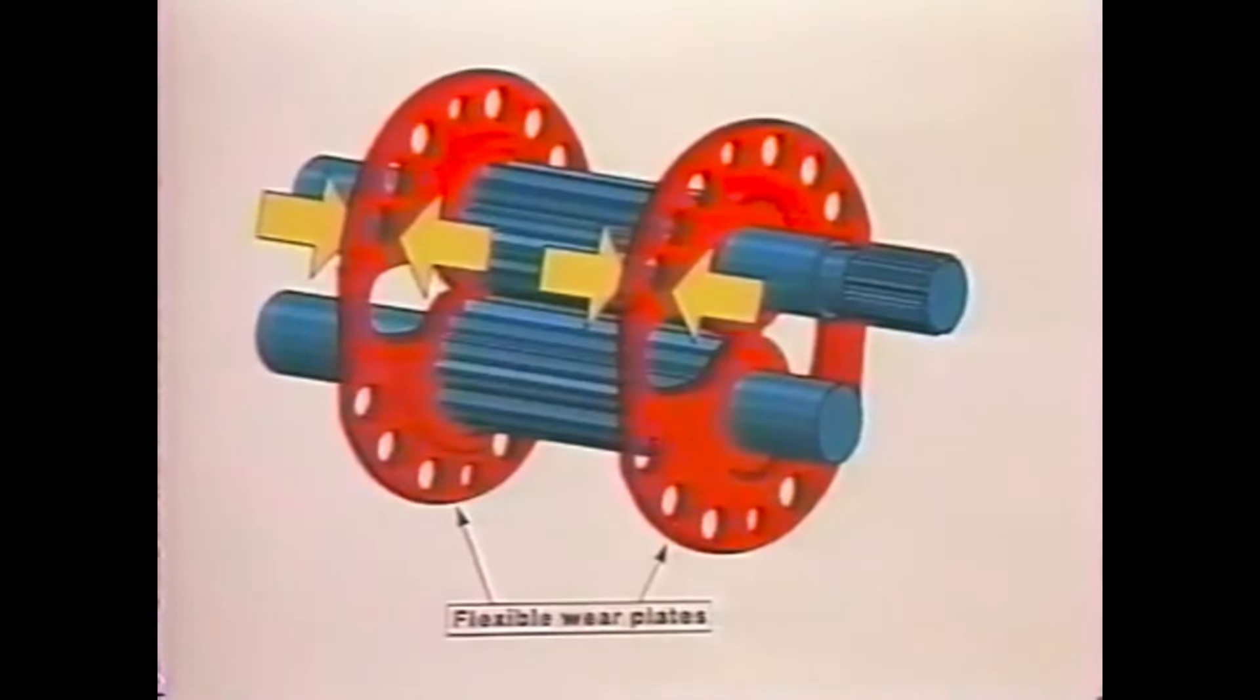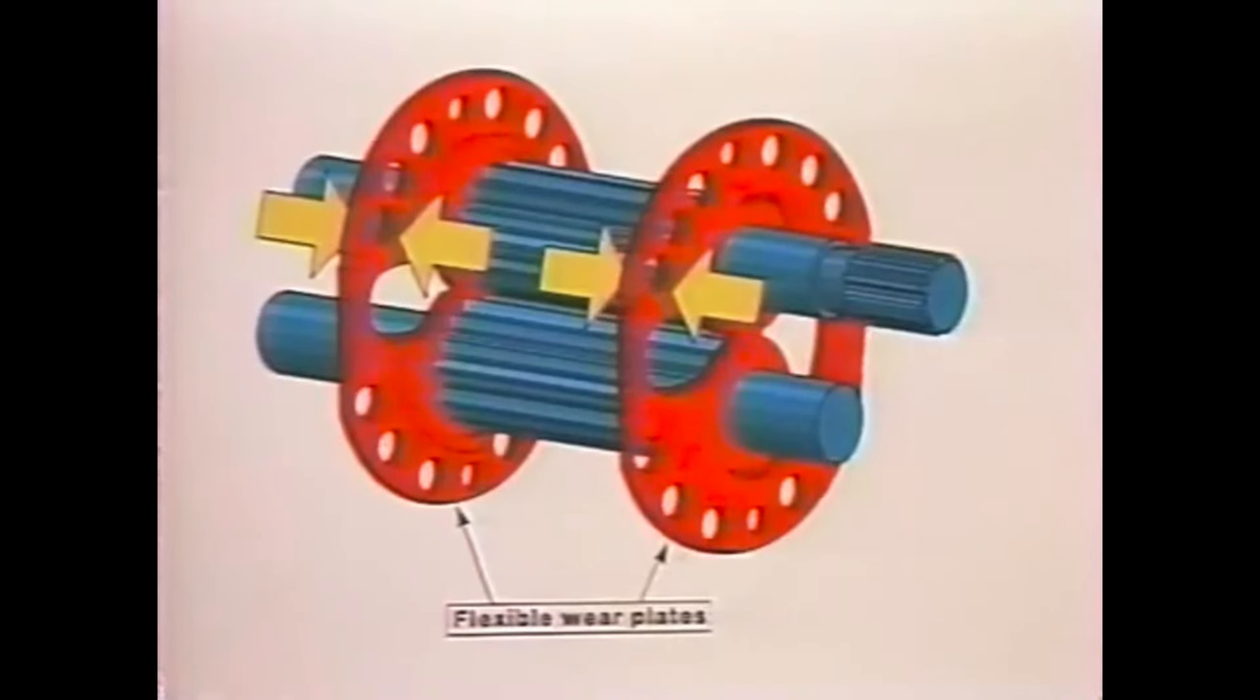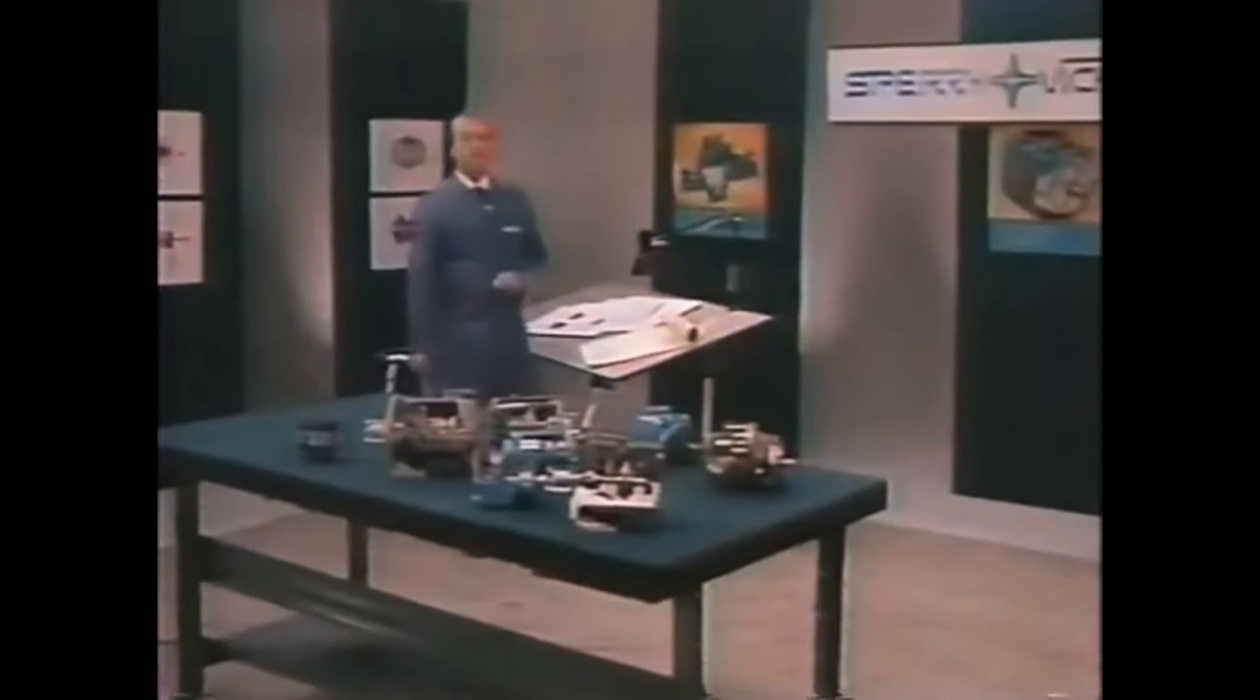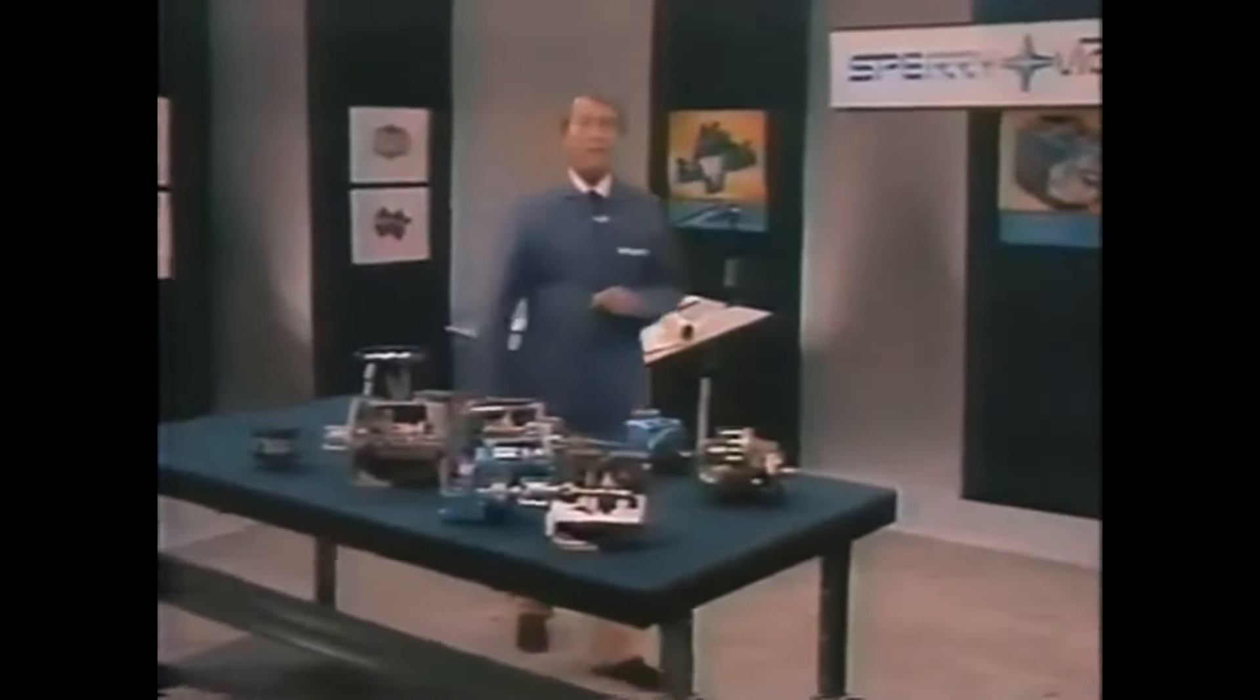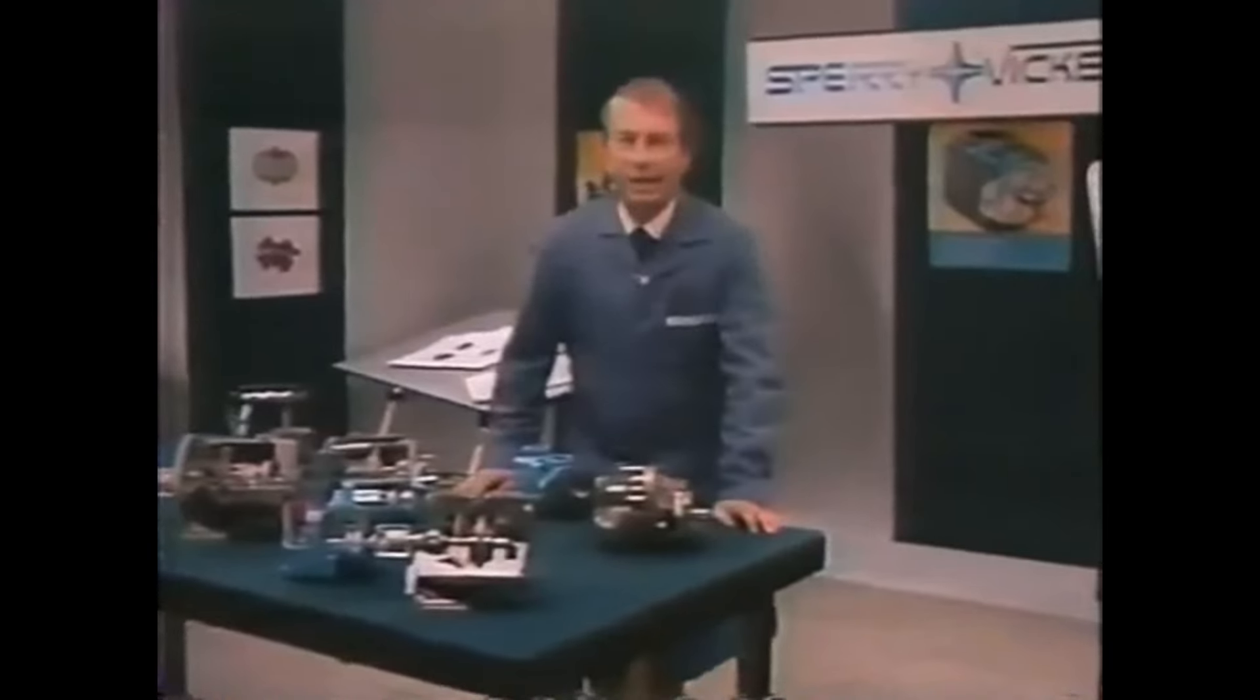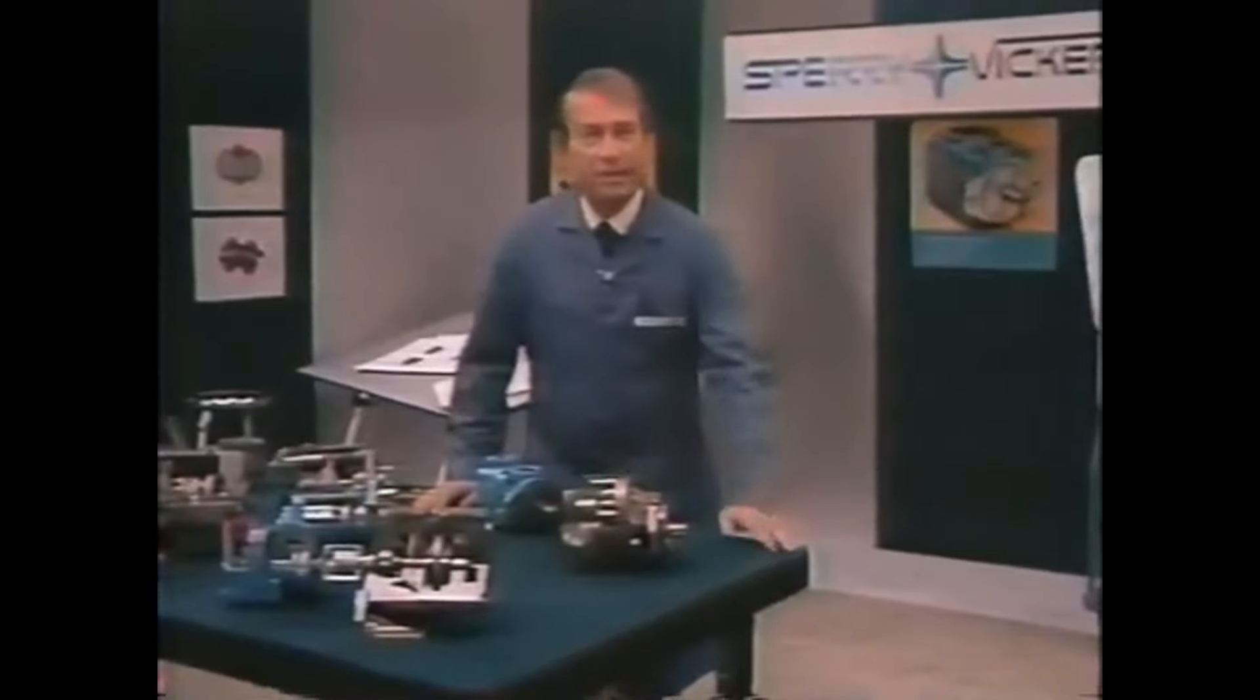This performance is at least partially the result of the addition of bronze-faced flexible wear plates. These plates are pressure loaded against the side faces of the gears, reducing clearance to a minimum. Passages in the wear plates also permit oil under pressure to extend farther around each gear to reduce the unbalanced hydraulic loading inherent in this type of pump. Sperry Vickers gear pumps range in size from 7 to 50 gallons per minute at 1,200 RPM, although considerably higher drive speeds are permissible. They're available as both single and double units.